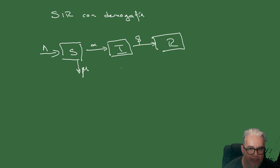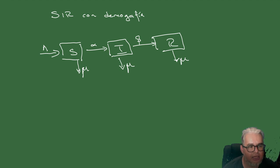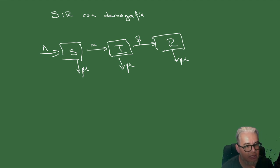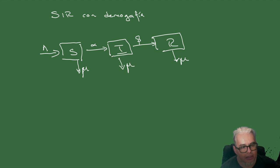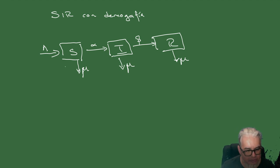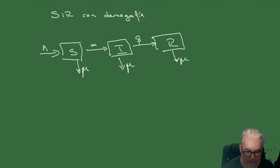Para cada una de las cajitas tenemos la misma tasa de mortalidad mu. Aquí todavía no estamos considerando la mortalidad asociada a una enfermedad. Simplemente es una enfermedad que dura suficiente como para preocuparnos de los efectos que pueda tener los cambios en la población. ¿Cómo es el sistema de ecuaciones diferenciales asociado a este modelo?